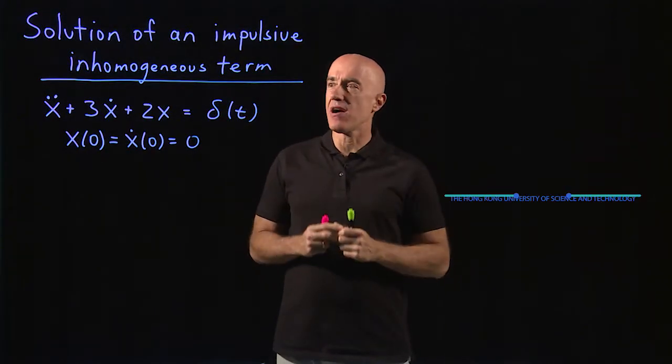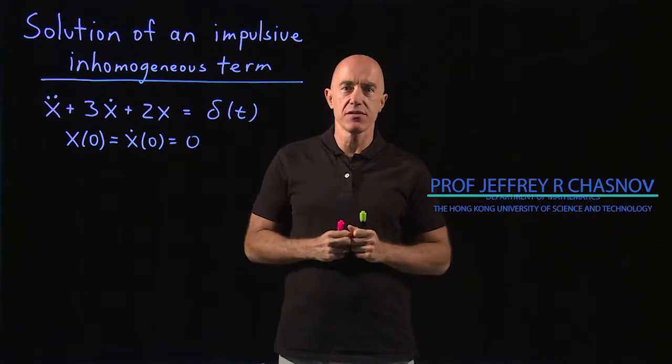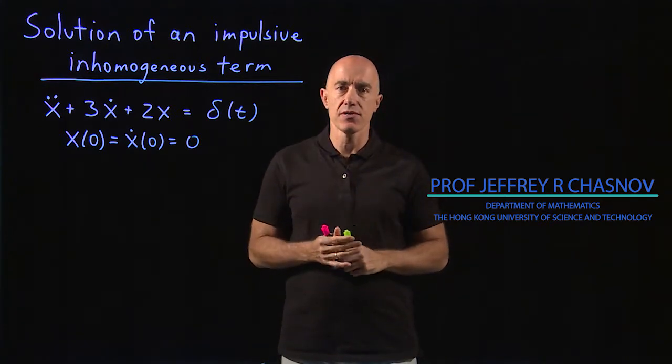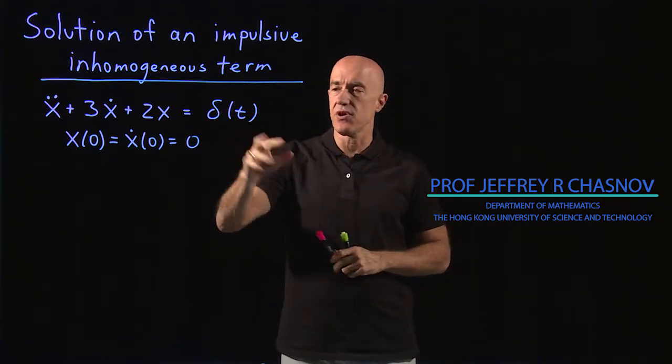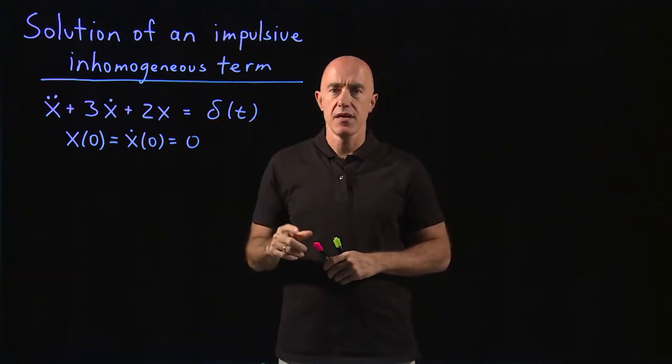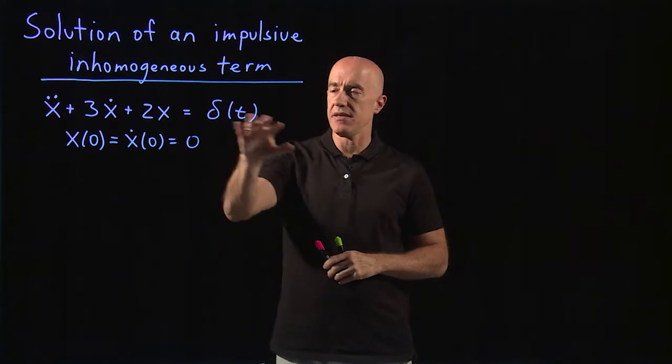So here's a problem using the Dirac delta function. It's an impulsive force, so the inhomogeneous term is modeled by a Dirac delta function that hits at t equals zero.